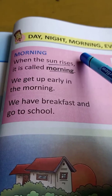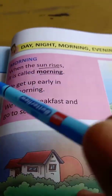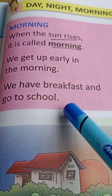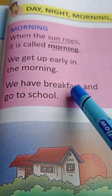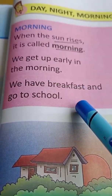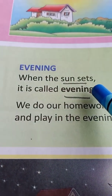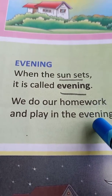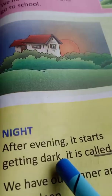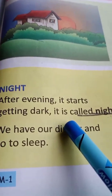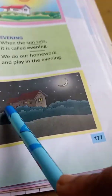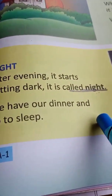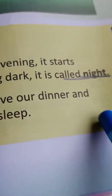Again: morning — the sun rises, that time is called morning. We get up early, have our breakfast, and go to school. In the evening, the sun sets — that time is called evening. We do our homework and play. At night time, after evening it starts getting dark — that time is called night. We have our dinner and go to sleep.